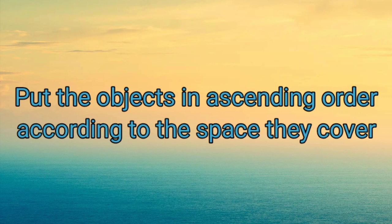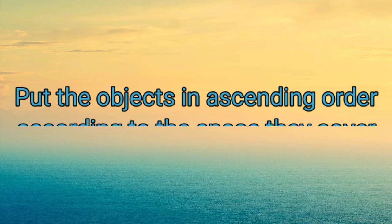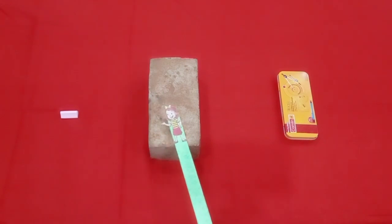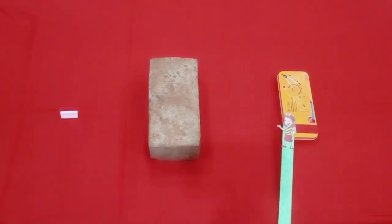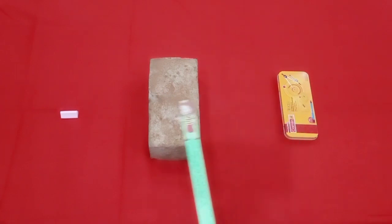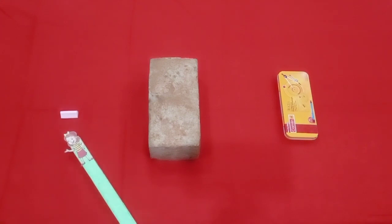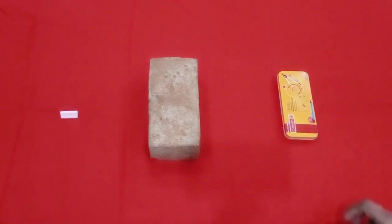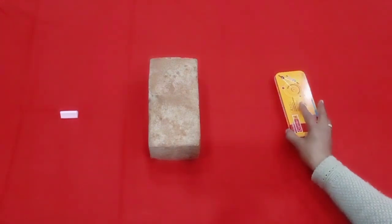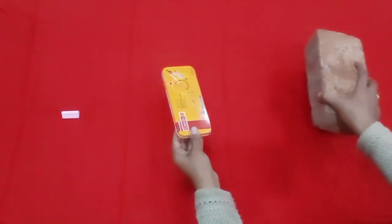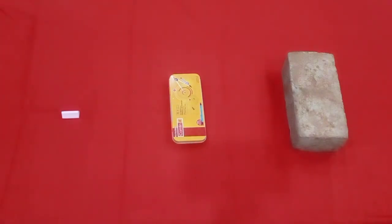Put the objects in ascending order according to the space they cover. We have three objects: eraser, brick, and geometry box. We see that the eraser is smallest in size, so it will come first. The geometry box covers more space, so it will come second. The brick is largest in size, so it will be placed last.